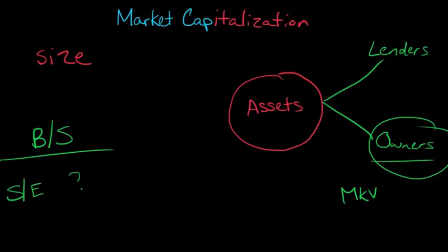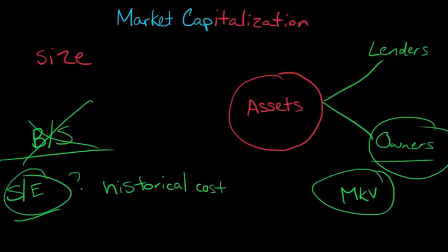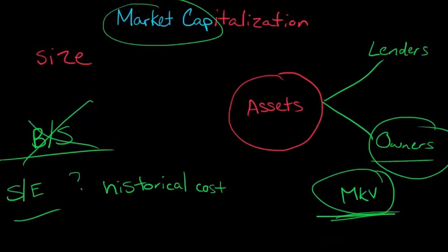We can't do that, because what we want is the market value of the firm's equity, and that's not on the balance sheet. The balance sheet stockholders' equity looks at things in terms of historical cost, because most assets are recorded at historical cost. So the stockholders' equity section of the balance sheet isn't going to tell us the market value of the firm's equity — and that's essentially what the market cap is. The market cap is the market value of the common shareholder's equity.